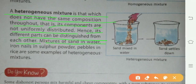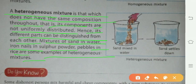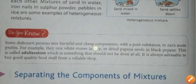Examples of heterogeneous mixtures include: mixture of sand in water, iron nails in sulphur powder, and pebbles in rice. In sand and water, you can see the sand and water separately. Similarly, iron nails and pebbles in rice can be seen distinctly — that is why these are called heterogeneous mixtures.